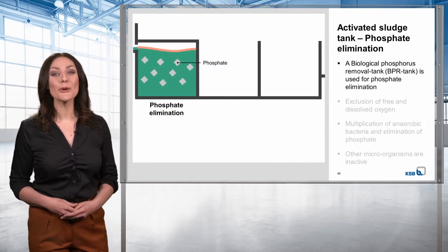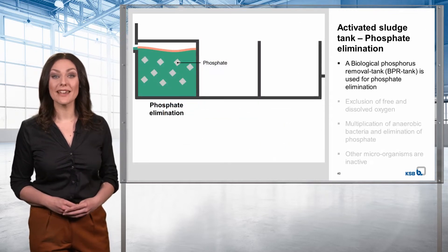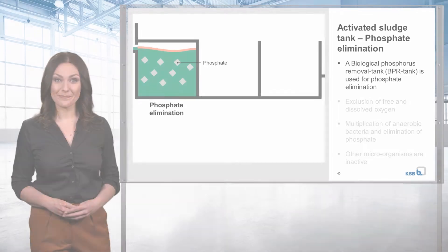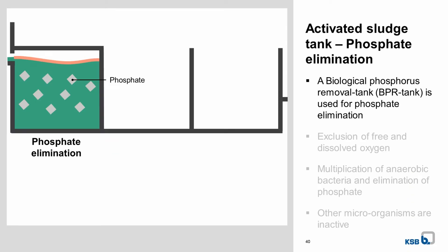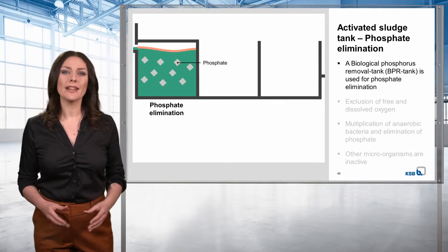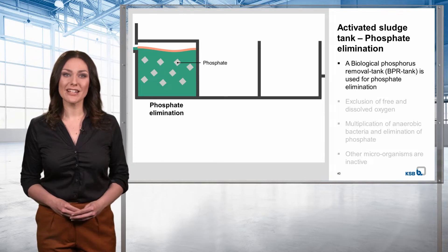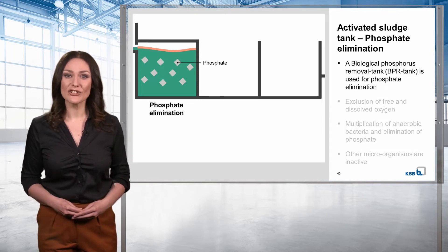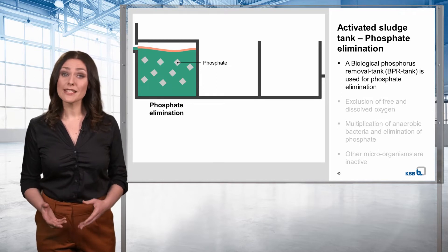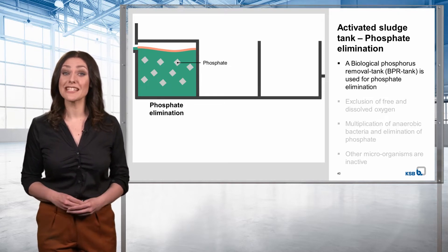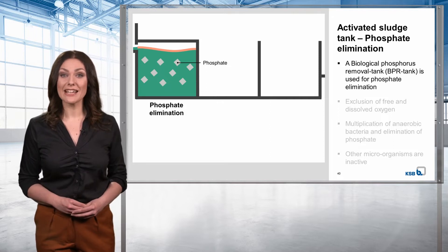Here in Huller, a so-called BPR tank is used for phosphate elimination. BPR stands for Biological Phosphorus Removal, sometimes also called a Bio-P tank. Not all plants use a separate phosphate elimination stage, as this process can also take place naturally. The trend is for modern plants to increasingly use phosphate precipitation instead of elimination.